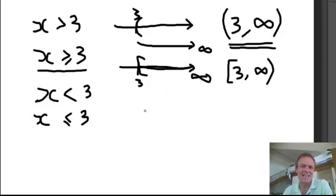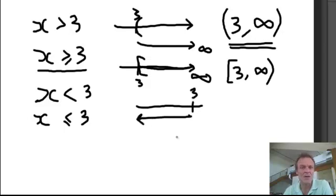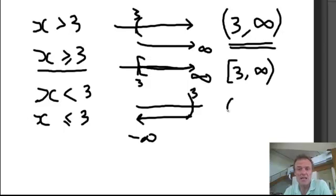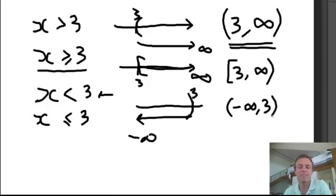Now, x less than 3 — again, here's the number line, here's the 3, but this time we are going that way. It doesn't have the equal sign, so I'm going to put a parenthesis. Notice where it's coming from this time: when it's greater than, we go to infinity, but this one's coming from negative infinity. We always go from left to right. So to write that as interval notation: parenthesis, going from negative infinity as far as 3, parenthesis — from negative infinity to 3.